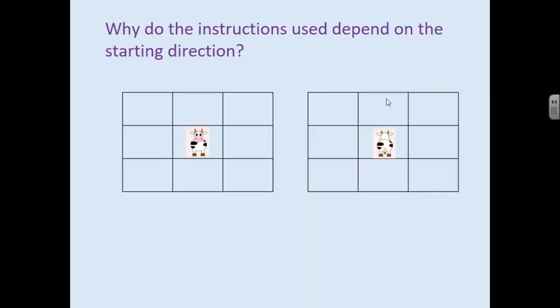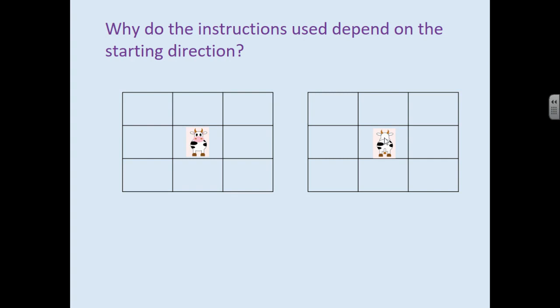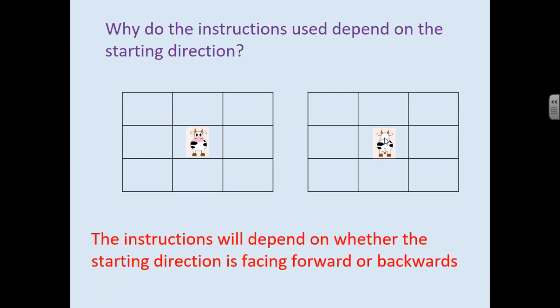Let's look at the two grids here. We've got the picture of the cow facing us and the picture of a cow facing the other way. Now think about the instructions you're giving and think about why the instructions used depend on the starting direction. So the instruction will depend on whether the starting direction is facing forwards or backwards.